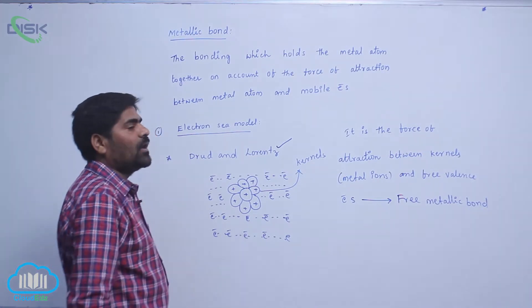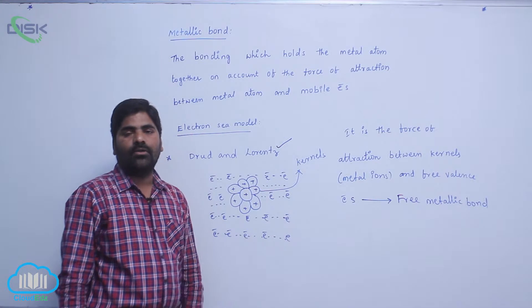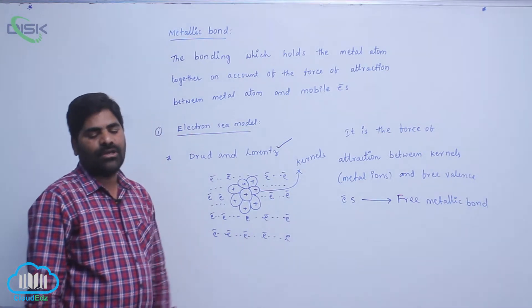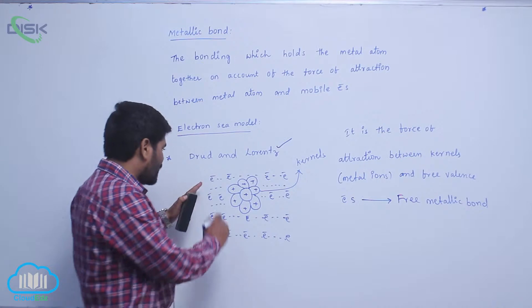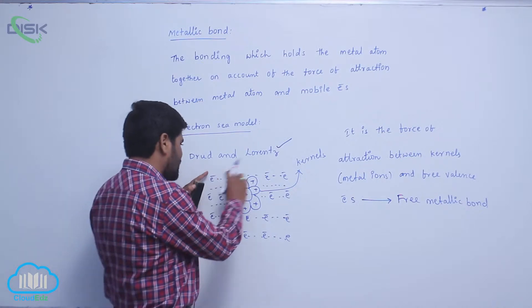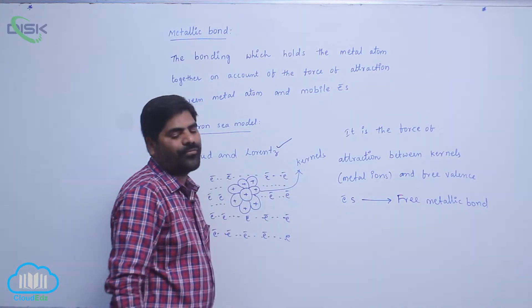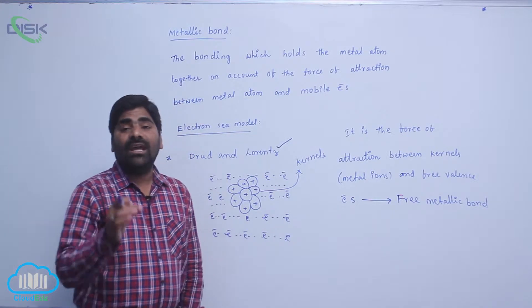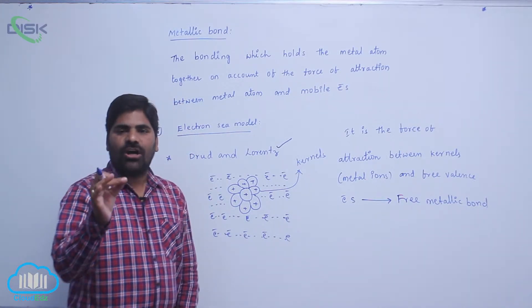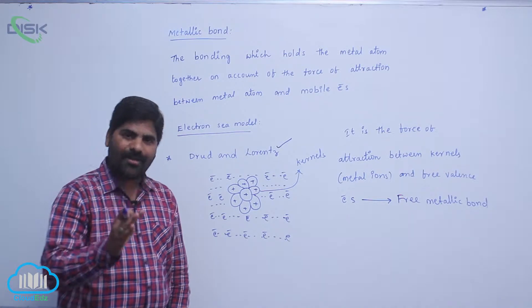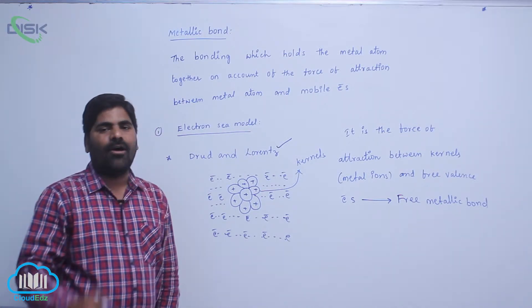According to this theory, a sea of valence electrons is easily attracted by positively charged ions, or metal ions.